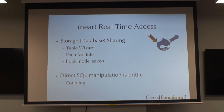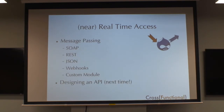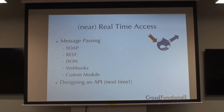The last part of near-real-time access is message passing, which is where most people actually consider integration. At that point you're looking at SOAP interfaces, REST interfaces, JSON, and also webhooks. Most of these are going to involve a custom module, although there are a couple of helper modules for these kinds of interfaces. Given more time, I'd also give pointers on how to actually design an API around other services as a way of decoupling systems.